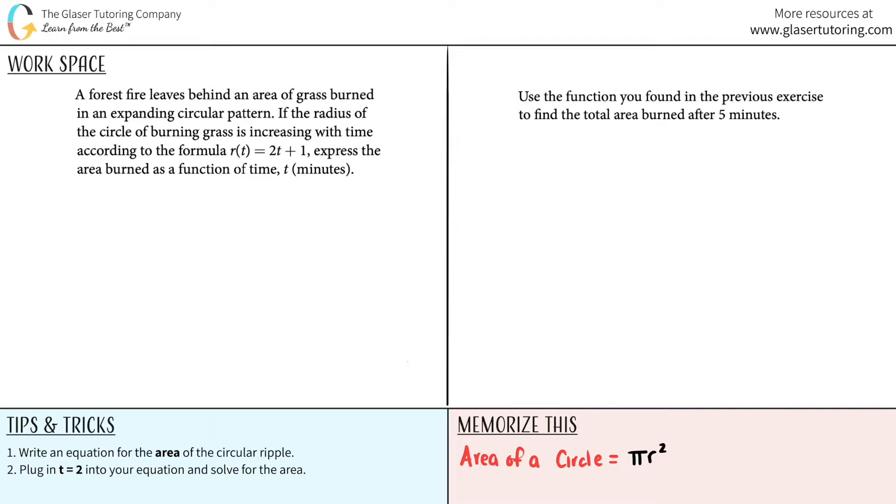A forest fire leaves behind an area of grass burned in an expanding circular pattern. If the radius of the circle of burning grass is increasing with time, according to the formula r(t) = 2t + 1, express the area burned as a function of time, which is t in minutes.